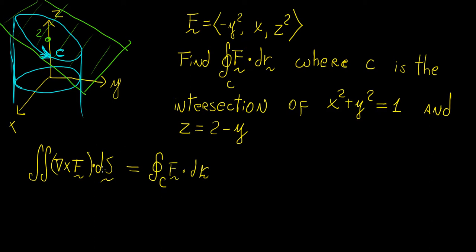What does this actually mean? We notice that the intersection creates an area oriented along some normal vector n. That normal vector is going to be oriented in the same direction as the normal vector for the surface z = 2 minus y.